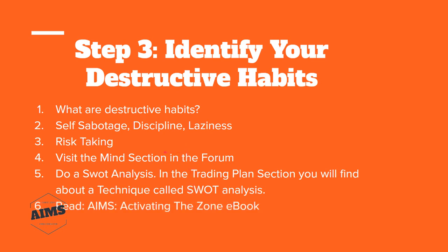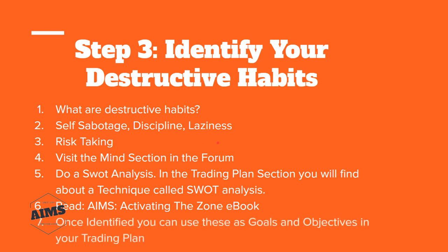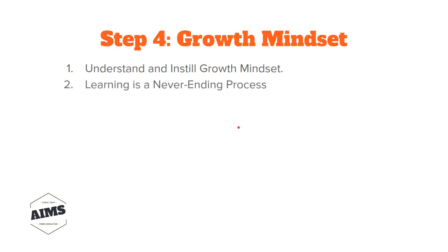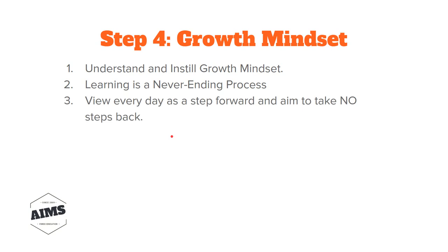When working on your trading plan, set goals and objectives based around your weaknesses and strengths. We also recommend reading the AIMS 'Activating the Zone' ebook about the mind and how to get into the right state of mind. Once identified, use these as goals and objectives in your trading plan. Step four: growth mindset. We need to understand and instill a growth mindset — this is a broader topic. Learning is a never-ending process and we need to view every day as a step forward.